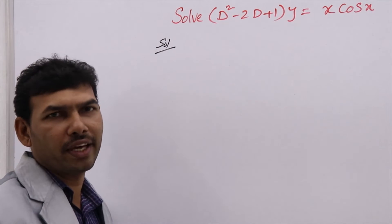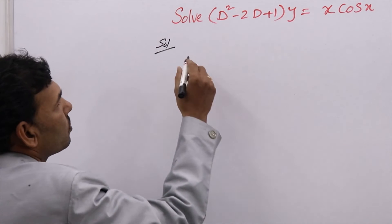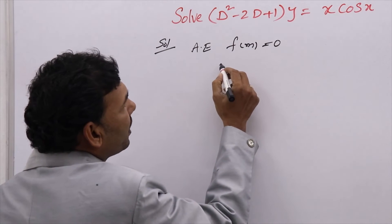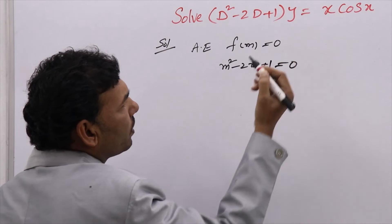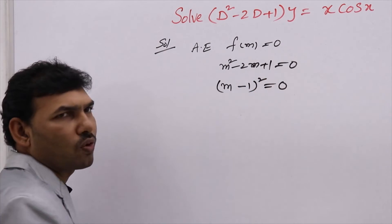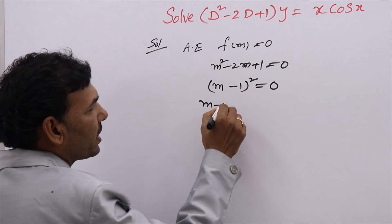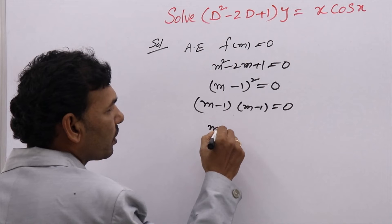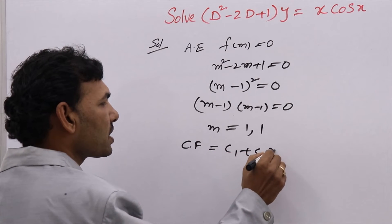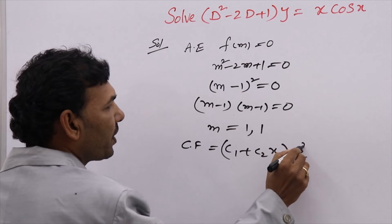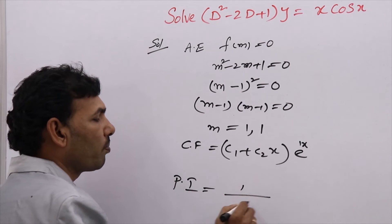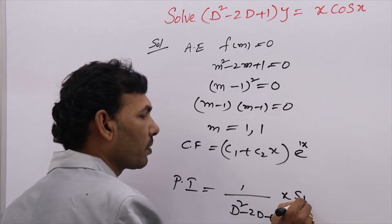Solve: (D²−2D+1)y = x·cos(x). To solve this, first write the auxiliary equation: f(m) = 0, which gives m²−2m+1 = 0. This is in the form (a−b)², so (m−1)² = 0, that is (m−1)(m−1) = 0, giving m = 1, 1. When roots are real and equal, the complementary function is CF = (c₁ + c₂x)·e^(x).